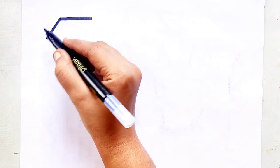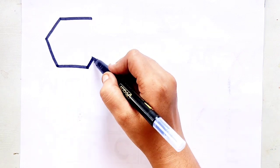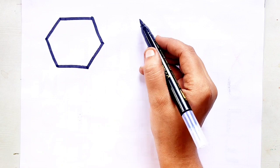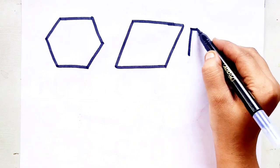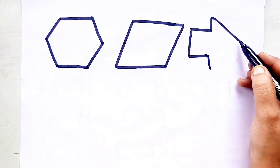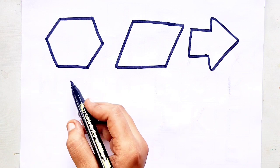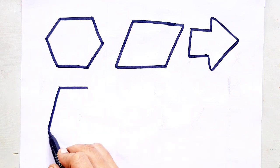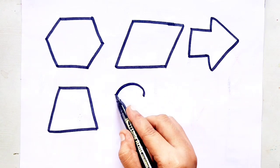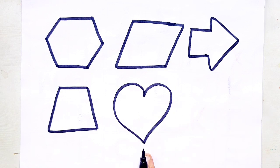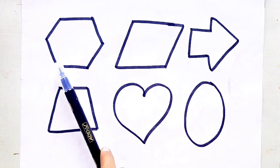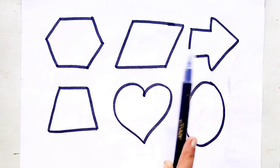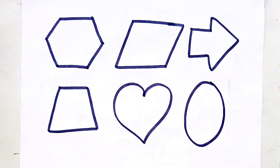Let's learn to draw some 2D shapes. Hexagon. Parallelogram. Arrow. Trapezoid. Heart. Oval. Hexagon, parallelogram, arrow, trapezoid, heart, oval — dark blue color.